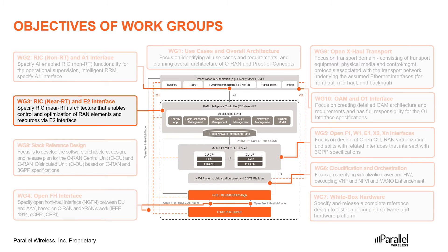As we have discussed earlier, WG3 deals with the near-real-time RIC and the E2 interface. Its main activities are to specify the near-RT RIC open architecture and its functionalities, the radio network information base and network topology, and modular onboarding of new control applications. In addition, WG3 is responsible for specifying the E2 interface between the near-RT RIC and the CU/DU stack. Finally, WG3 oversees interaction with WG2, WG5, and WG6 to drive aspects related to near-RT RIC. Let us start looking at specifications and reports approved by WG3.